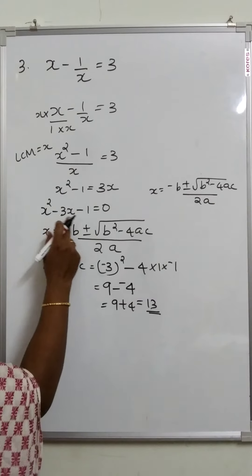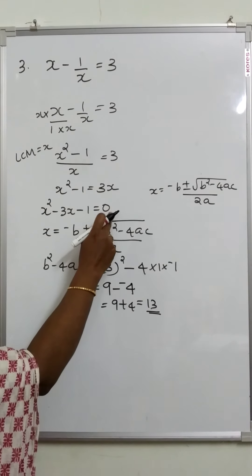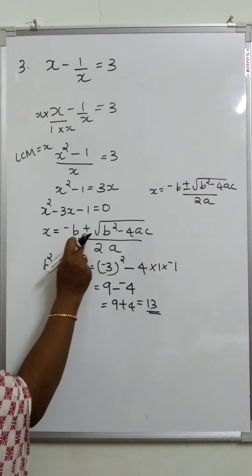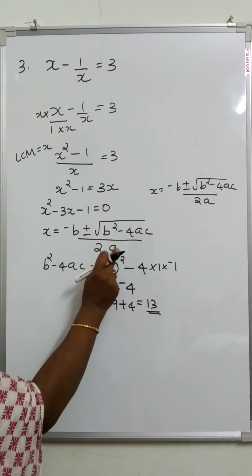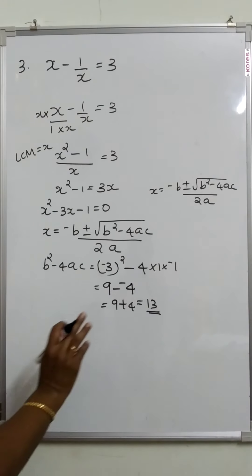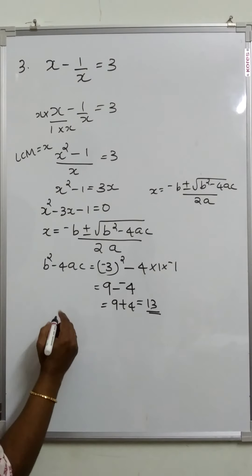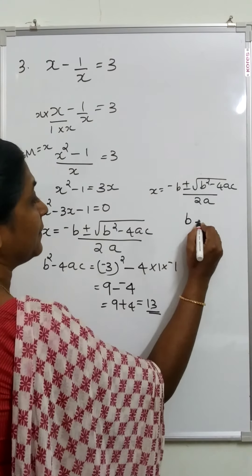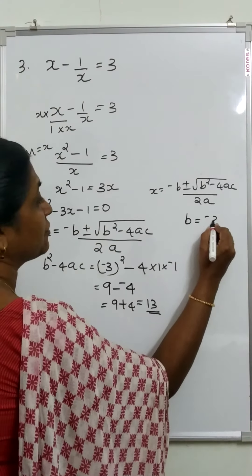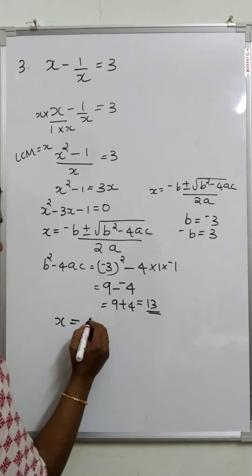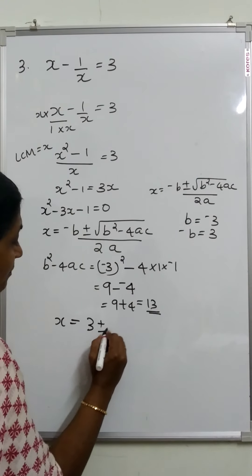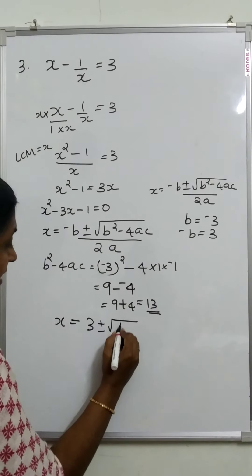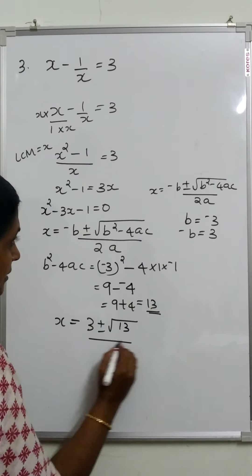The equation x squared minus 3x minus 1 equal to 0 gives x equal to minus b plus or minus root of b squared minus 4ac by 2a. Here b is equal to minus 3, so minus b is equal to plus 3. Substituting, we get 3 plus or minus root of 13 by 2.